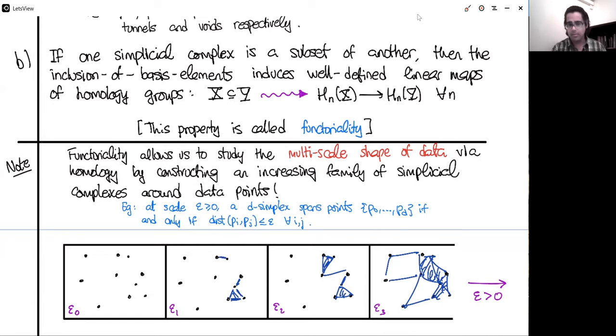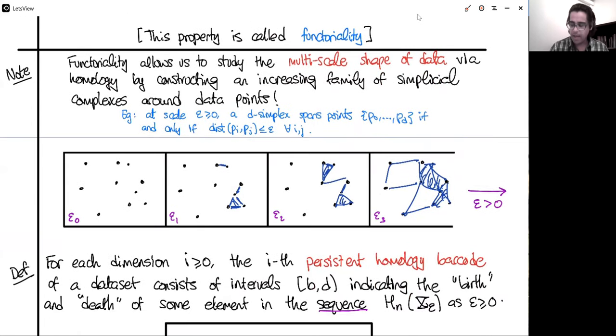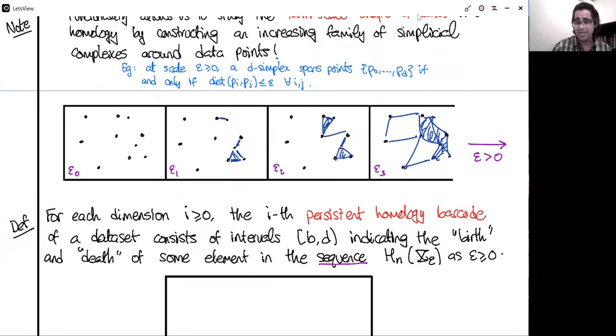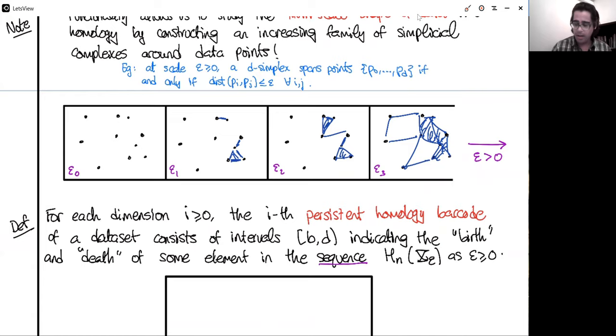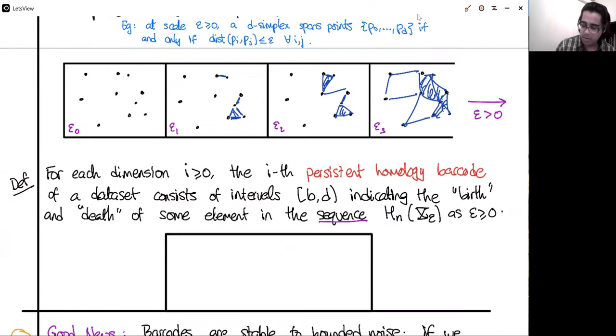So we have an increasing sequence of simplicial complexes. By functoriality, there are maps between their homology groups in every dimension, going from left to right, from smaller to bigger. And you can record when some homological features, so remember, in low dimensions, there were connected components or tunnels or cavities, when these are born and when they die. So which epsilons are they born and die for? And you can record all this information in a nice combinatorial way in an object that's called a barcode.